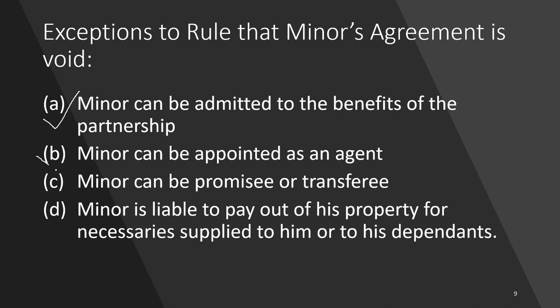A minor can be appointed as an agent. The entire responsibility of the agent lies on the principal, so a minor can be an agent but not a principal. You cannot appoint agents as a minor, but you can be an agent for a principal. A minor can be a promisee or transferee — a minor cannot promise to do something, but others can promise to the minor. The minor can be at the receiving end but not at the execution end.